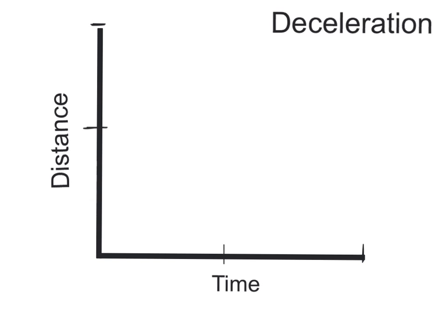Alright, for the next graph, we're going to look at deceleration. And we're going to represent it with this orange line. And we're going to also label it the same way that we've been doing the other graphs with five and ten meters and five seconds and ten seconds. So if we look at this graph, deceleration means going from fast to slow.